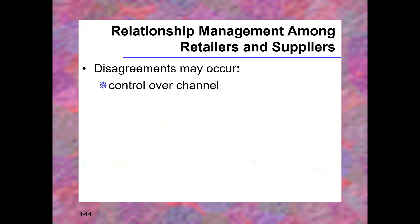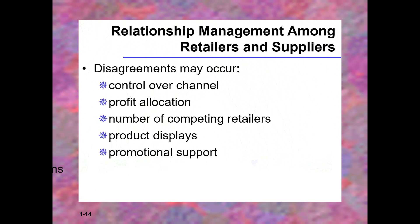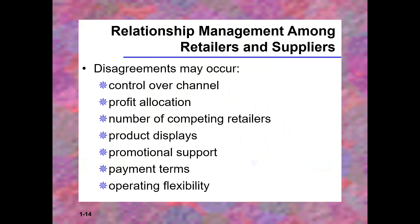When looking at relationship management among retailers and suppliers, disagreements can arise over: control of the channel, the amount of profits shared, the number of competing retailers, how products are displayed on shelves, promotions, payment terms — such as two percent ten net thirty or even less — and flexibility of operation.